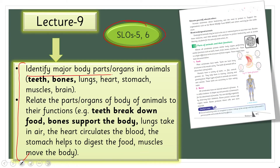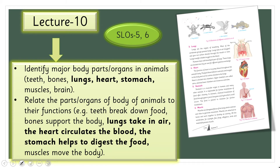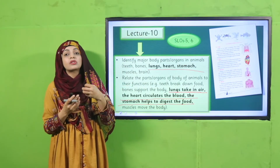In lecture number nine, students will be able to identify major parts and organs in animals like teeth and bones. In lecture number ten, the same SLOs five and six will continue — we will discuss lungs, heart, and stomach, as well as their functions: lungs take in air, the heart circulates blood, and the stomach helps to digest food.